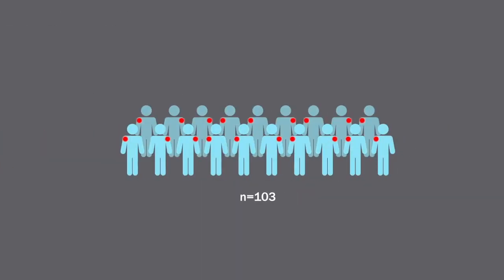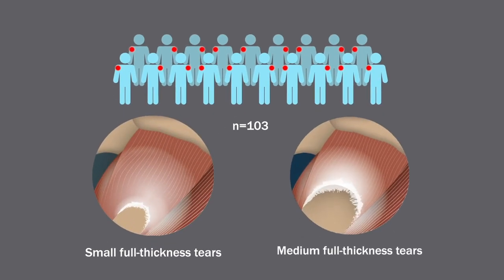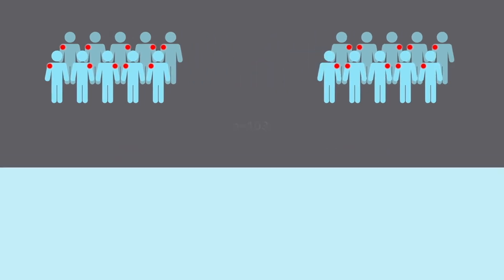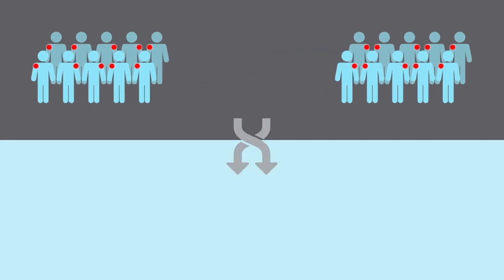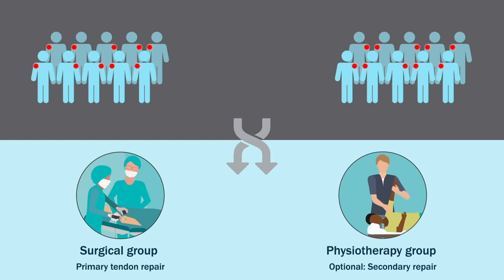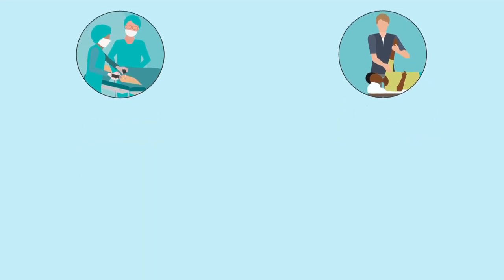103 patients with small and medium-sized full-thickness rotator cuff tears that did not exceed 3 cm were randomized to treatment groups of either primary tendon repair or physiotherapy with optional secondary repair.